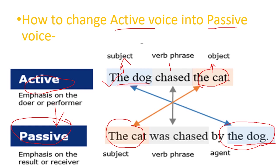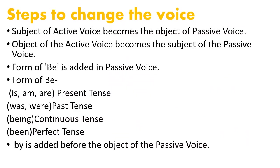When you make the subject of active voice the object of passive voice, before writing that object, write 'by.' These steps will help you understand better. Step 1: Subject of active voice becomes the object of passive voice. Step 2: Object of active voice becomes the subject of passive voice. For example: 'Hari sings a song' becomes 'A song is sung by Hari.'